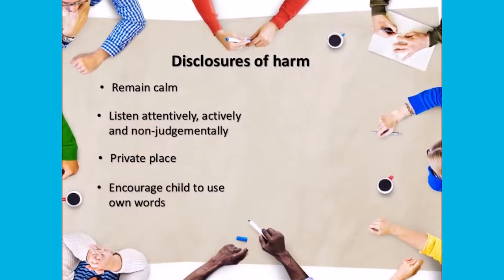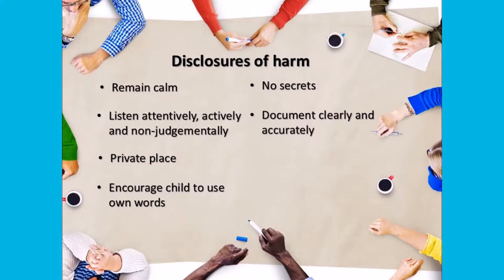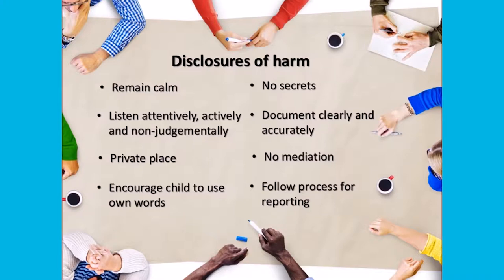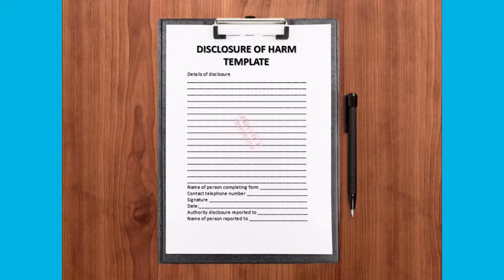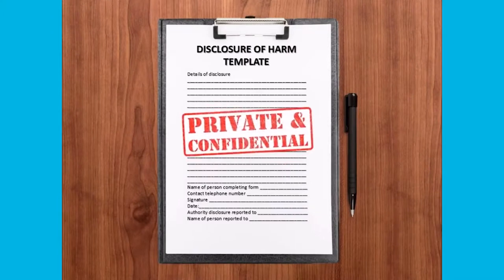Encourage the child to talk in their own words and ensure that only open-ended questions are asked to act protectively. Ensure that the child is advised that the disclosure cannot remain a secret and that it is necessary to tell someone in order to get help. Document the disclosure clearly and accurately. Do not attempt to mediate an outcome and follow the appropriate process in relation to reporting a disclosure of harm. It is helpful to provide a template to assist staff in recording a disclosure or suspicion of harm.